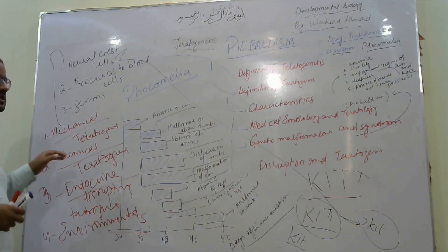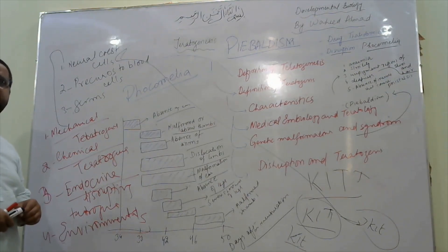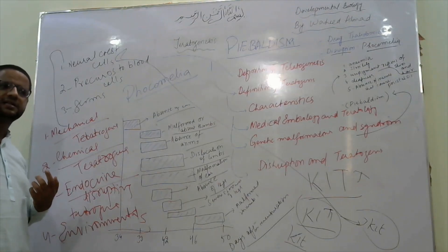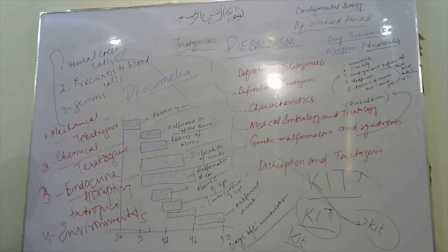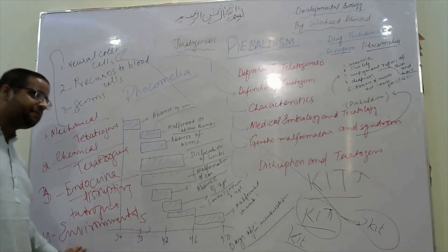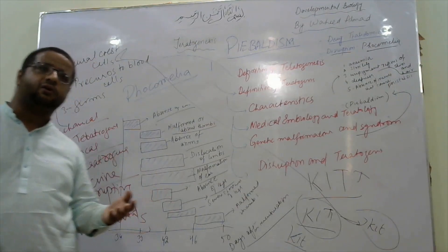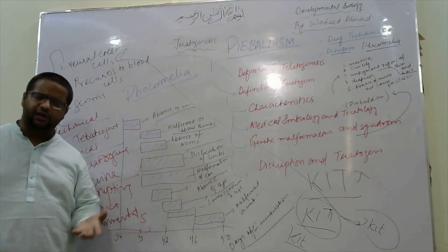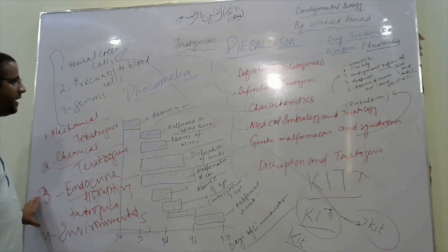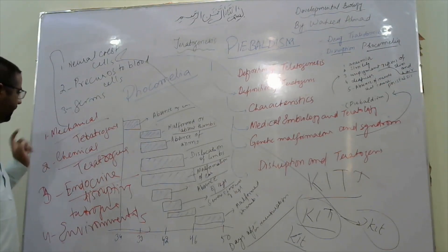Mechanical teratogens are those where physical harm occurs during the developmental process — for example if a fetus's leg is damaged by some mechanical force, that malformation will exist throughout life. Chemical teratogens — certain chemicals such as thalidomide are chemical teratogens that affect development at specific stages. Endocrine disrupting teratogens affect hormonal activity and thus the development of an organism. Environmental teratogens — such as eutrophication causing algal bloom — create hypoxic and anoxic conditions in water, resulting in malformations in marine organisms.